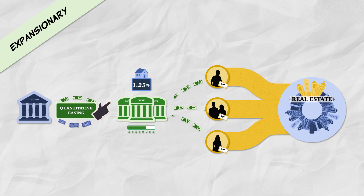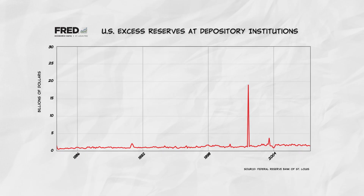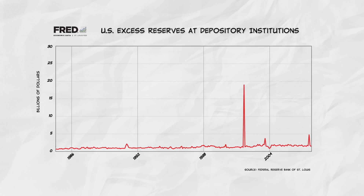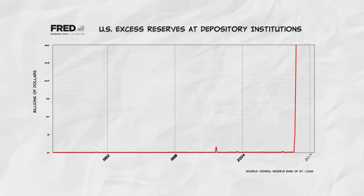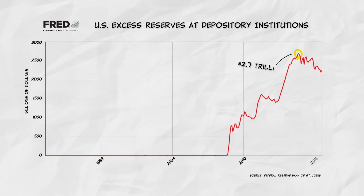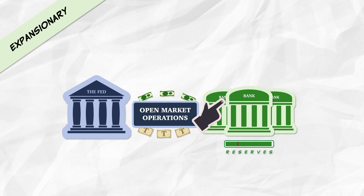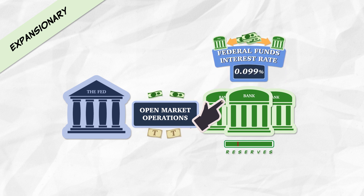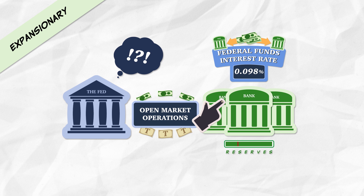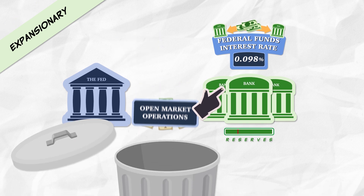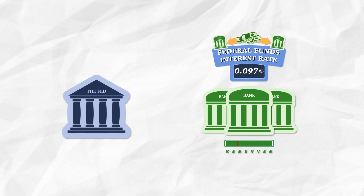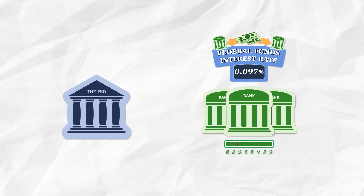Quantitative easing also increases the bank's supply of reserves and thus liquidity. Since 2008, excess reserves in banks have increased from about $2 billion to $2.7 trillion. Changing the supply of reserves and the federal funds rate, as the Fed did through open market operations, was no longer going to be so effective in boosting loans. In this new environment, banks had so many reserves they had enough for all their lending requirements. Furthermore, with banks holding so many excess reserves, the federal funds market just wasn't so big or so important anymore, and the Fed had to look for other tools.